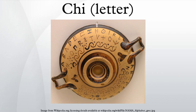In engineering, chi is used as a symbol for the reduction factor of relevant buckling loads in EN 1993, a European standard for the design of steel structures.